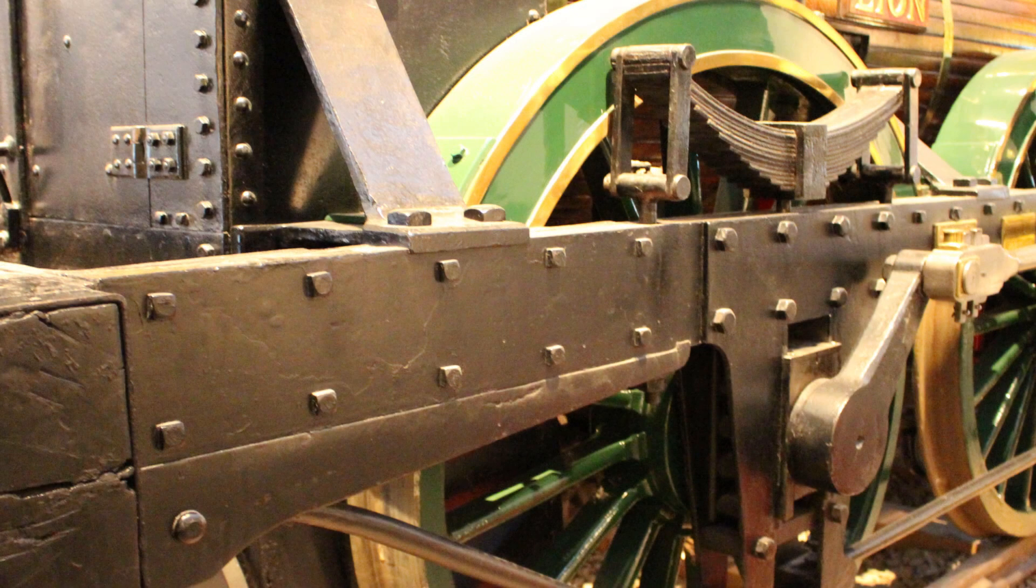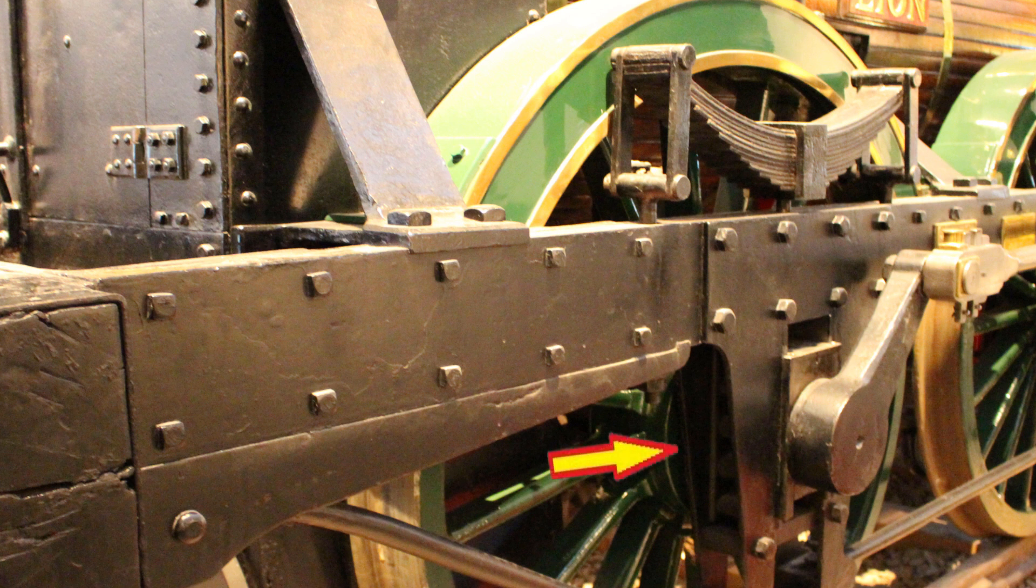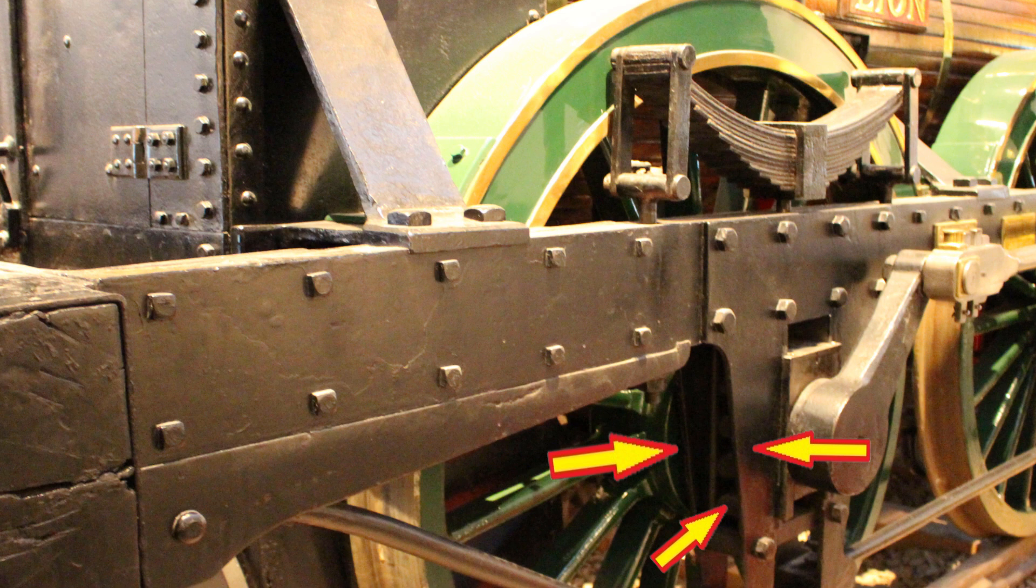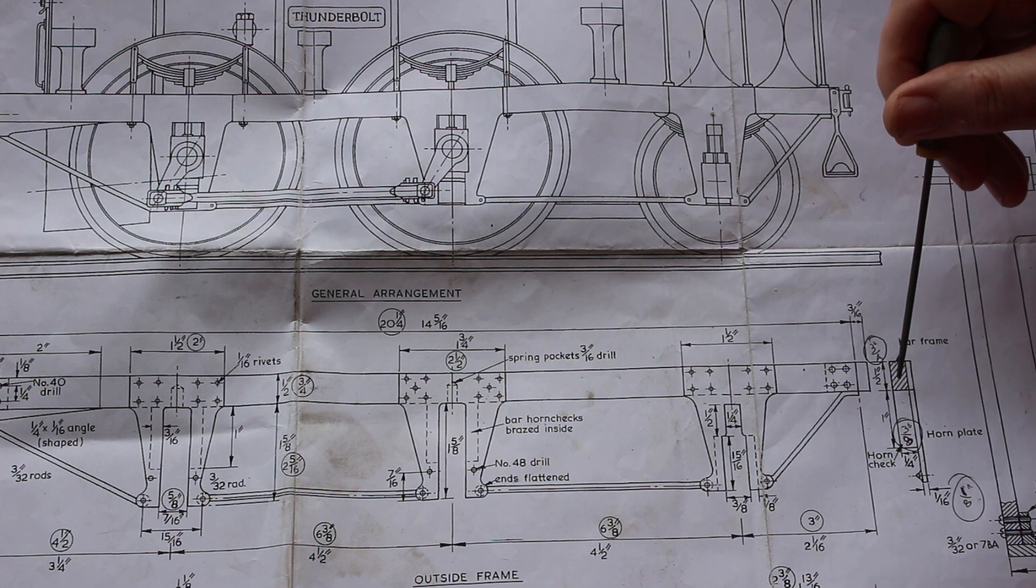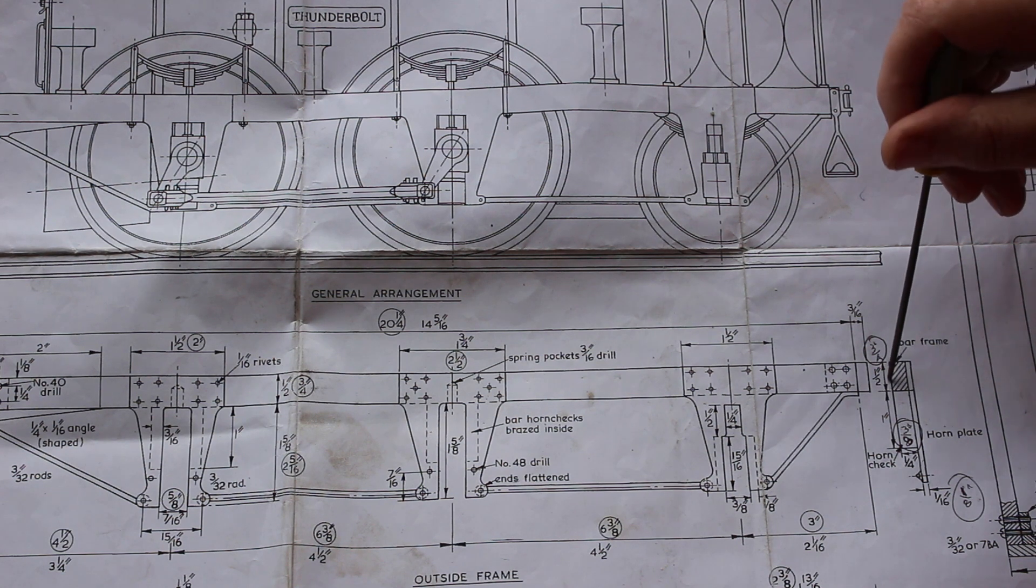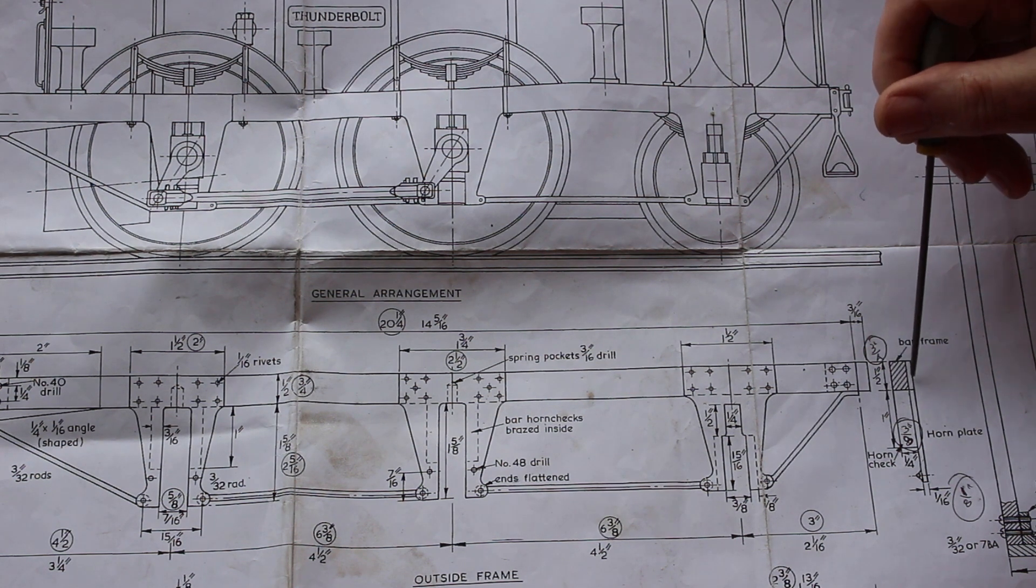When you look at the actual engine in the Liverpool museum it has a horn plate on each side of the frame with a spacer in between. I'm going to proceed replicating the full size engine with a horn plate on each side. I'm going to make them one sixteenth of an inch thick.